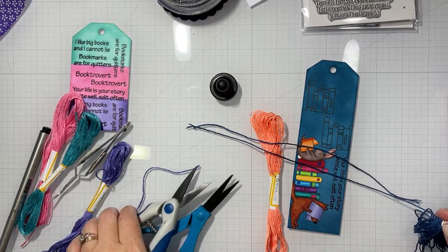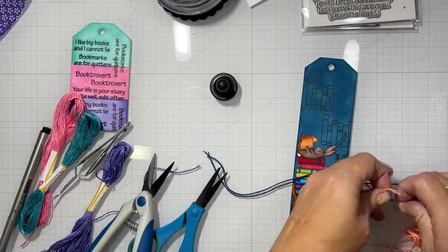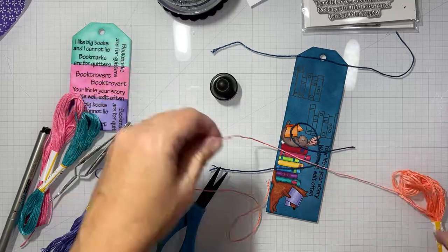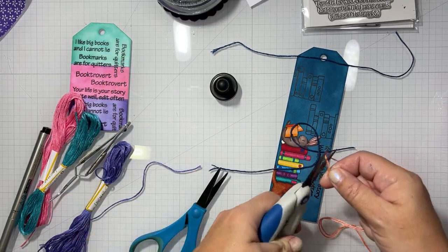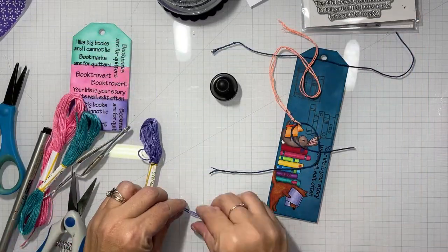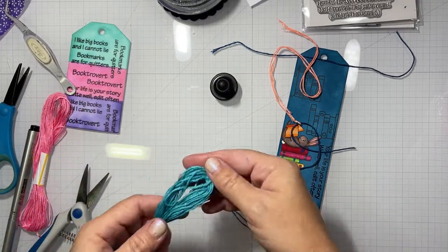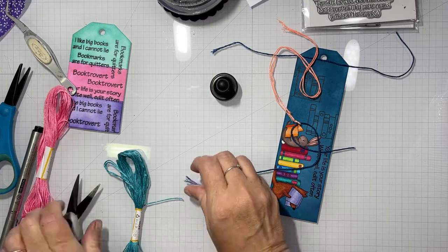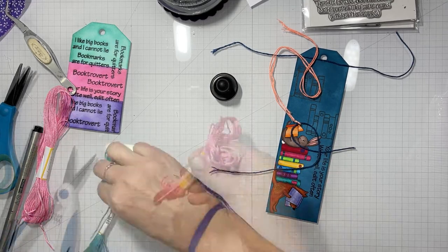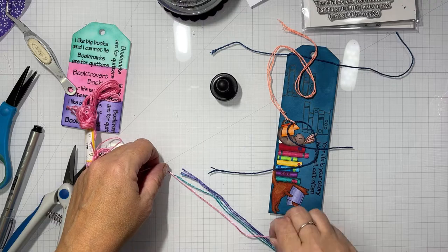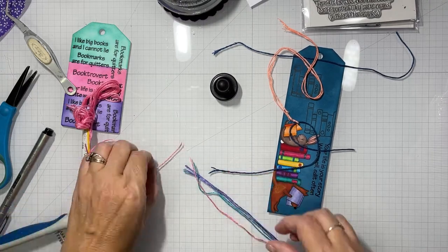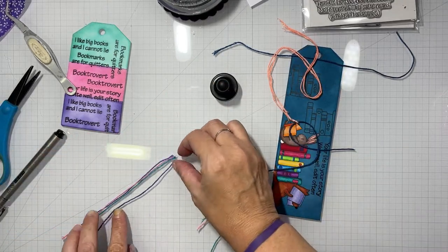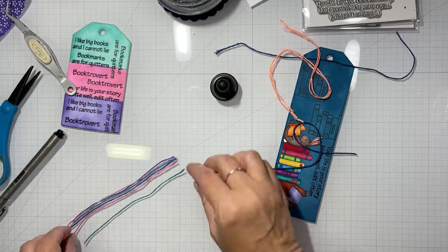And now we're going to go with our thread. So I tried to pick thread that would match each bookmark. I went with a dark blue and kind of a peachy color for the longer, thinner bookmark because the rabbit's holding a peachy colored book. And then for the other one, I tried to match up the colors of the ink blending. I did two, cut two pieces of each color. Not doing anything fancy. I thought about making tassels because I can do it, but it's kind of a pain in the butt. I don't have a very easy time with it. So I just decided to do a simple fold in half, swoop through the hole, pull through.